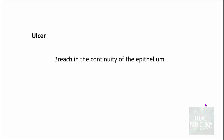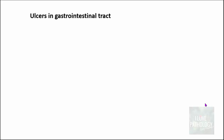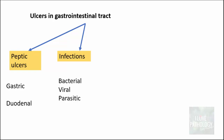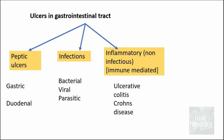Before we understand these two things, let us see what an ulcer means. An ulcer is basically a breach in the continuity of the epithelium, which can either be skin or mucous membrane. We are dealing with the gastrointestinal tract epithelium, which is basically a mucous membrane. Ulcers in the gastrointestinal tract are categorized into various subtypes, which could be peptic ulcers — gastric and duodenal — which we have discussed earlier. It could also be due to infections, which can be bacterial, viral, or parasitic.